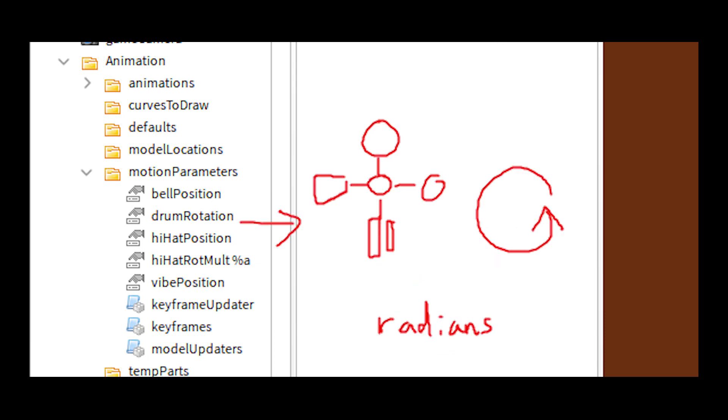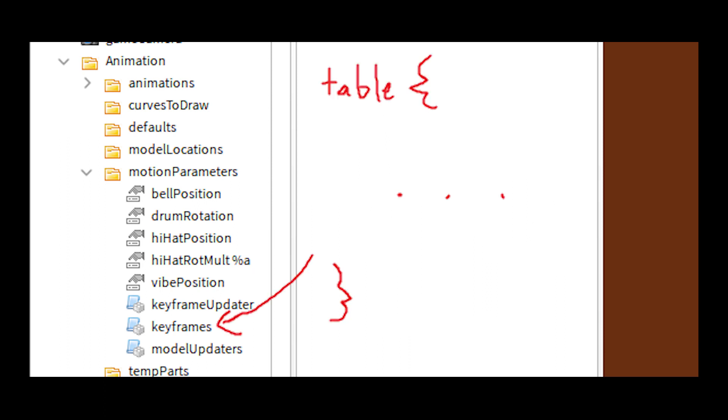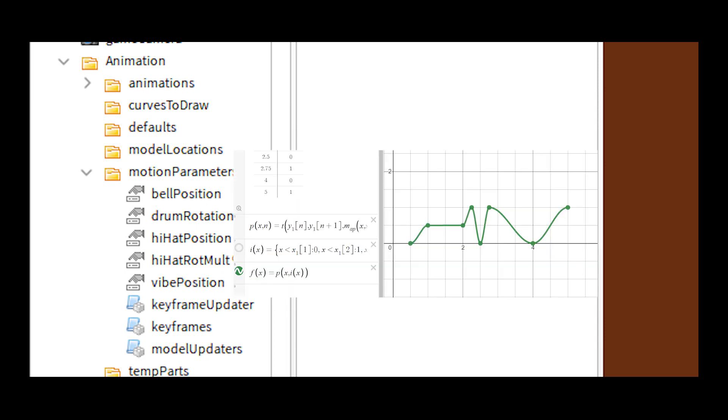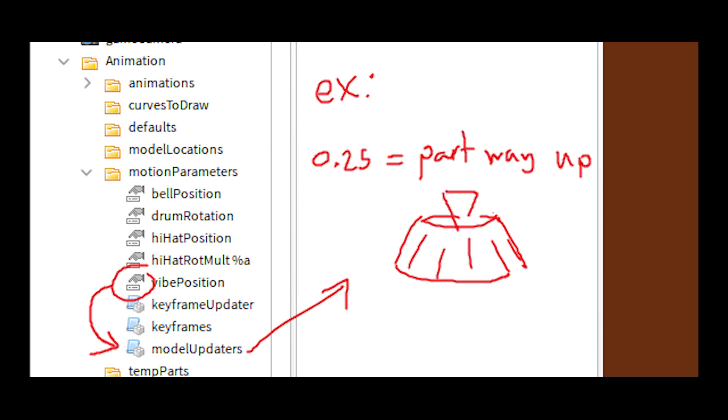Keyframes is just the Lua table that holds the keyframe info. Keyframe updater is just the logic in the Desmos graph. And finally, model updater is what actually reads the number and then puts the model in the correct position.